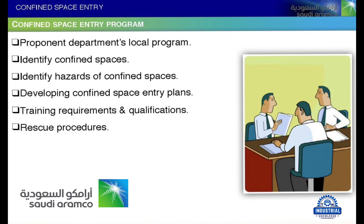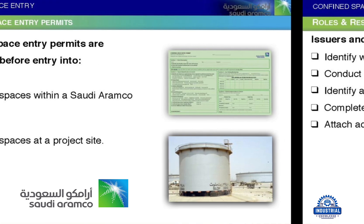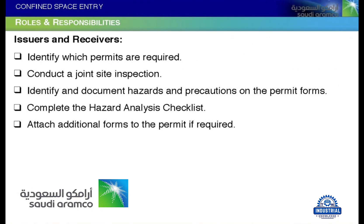The confined space entry program covers: proponent departments, local program, identifying confined spaces, identifying hazards of confined spaces, developing confined space entry plans, training requirements and qualifications, and rescue procedures. Roles and responsibilities include issuers and receivers, who identify which permits are required and conduct the joint site inspection.